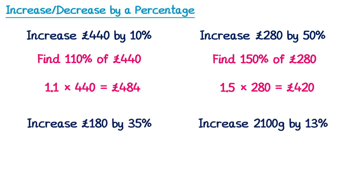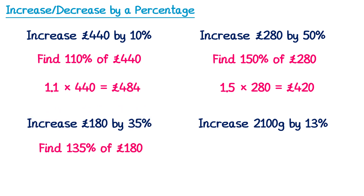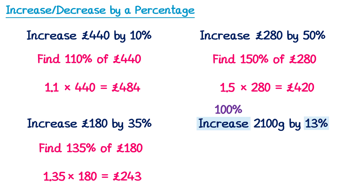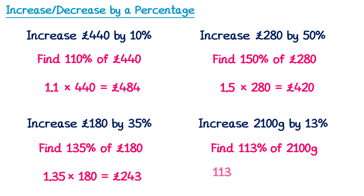Here are two more for you to try using the calculator approach. For the first, increasing by 35%: 100% + 35% = 135%. We want 135% of £180: 135 divided by 100 is 1.35, multiplied by 180 gives £243. For the second, increasing by 13%: 100% + 13% = 113%. We want 113% of 2100: 113 divided by 100 is 1.13, multiplied by 2100 gives 2373 grams.